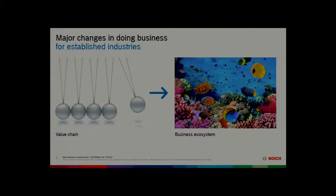They want to go into that space and use all the knowledge they have in the hardware area. In the software area, it's more and more about business ecosystems rather than the typical hardware value chain. With business ecosystems, the ecosystem must work and everyone in it must be prospering — then you can sell your products. But if the ecosystem is not doing well, no matter how good your product is, you cannot sell it.